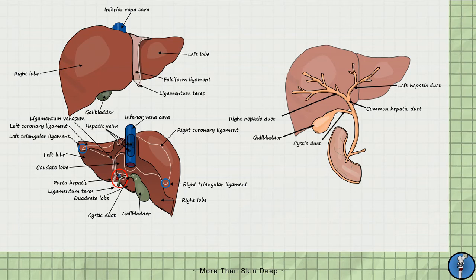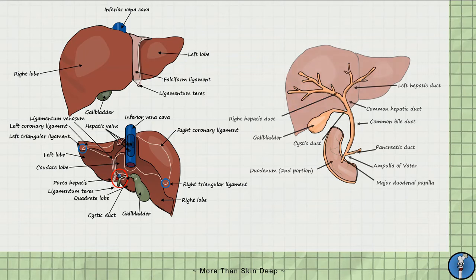Bile is then excreted into the cystic duct, which combines with the common hepatic duct to form the common bile duct. The common bile duct then unites with the pancreatic duct to form the dilatation known as the ampulla of Vater. The distal end of the ampulla opens into the duodenum via the major duodenal papilla.